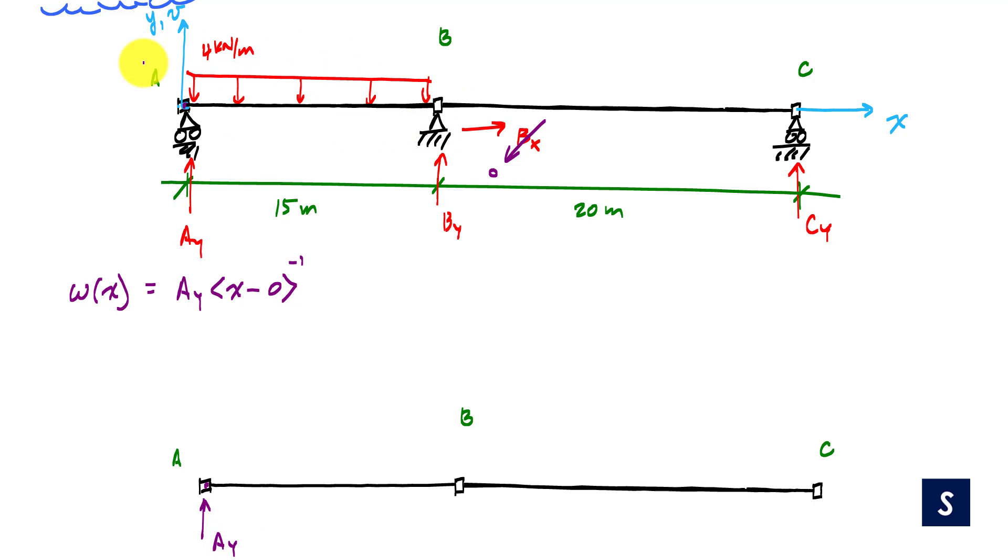Now I have a uniformly distributed load pointing down. So that's going to be negative four kilonewtons per meter. The negative is because the load is pointing down, X minus zero, because I turn on or I start the uniformly distributed load at X equals zero to the zero. And that zero power indicates that it's constant. And this function right here, underlined in orange, what it really is, is a uniformly distributed load that goes all the way across on the beam like this. Because once you turn it on, you cannot turn it off. It's like a lot of things in life.